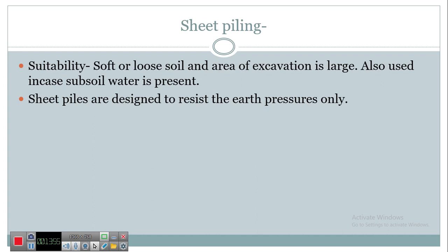If depths are greater, supporting arrangements of waling, struts, and stay bracing may be provided. Sheet piles can be constructed of many different materials like timber, concrete, or steel, and in various shapes — we will see that also in deep foundations. That covers all the types of timbering and strutting. Thank you so much, everyone — I hope you got all the concepts.